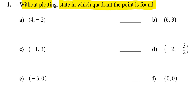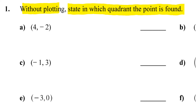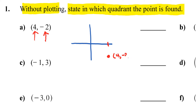I will do a little bit of plotting to get some of these questions going. Once you get comfortable with the quadrants you can probably figure this out quickly. If I have 4 comma negative 2, that means I go right 4 units and then down 2 units. Knowing the quadrant system — 1, 2, 3, 4 — we're in quadrant 4.